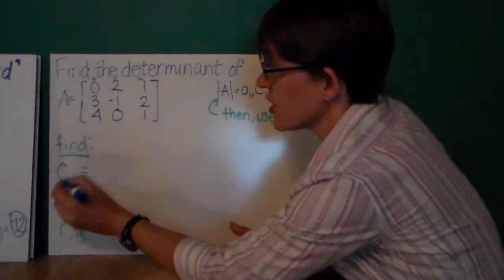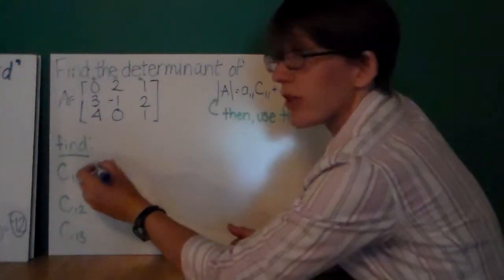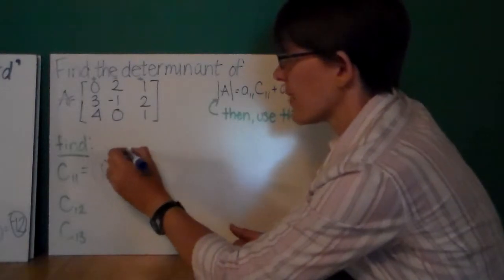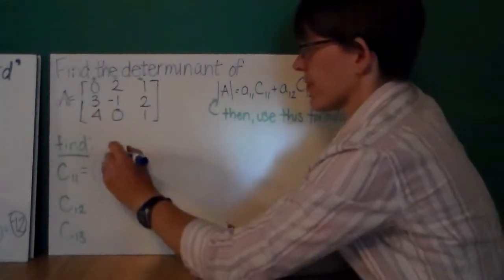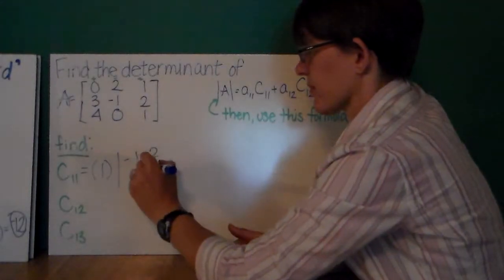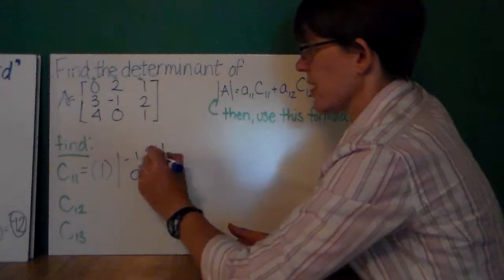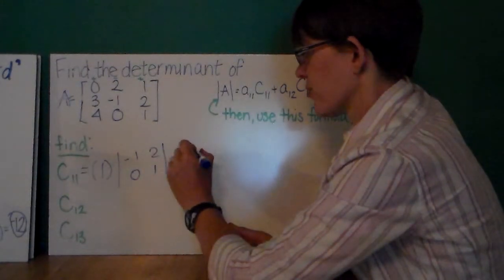So, cofactor of 1, 1, that's going to be negative 1 squared, or just positive 1, times my minor. Here's my minor determinant. And, when I calculate this, I get negative 1.